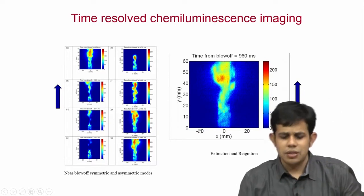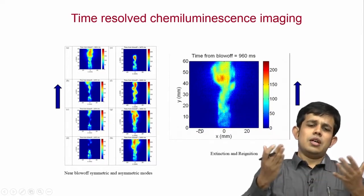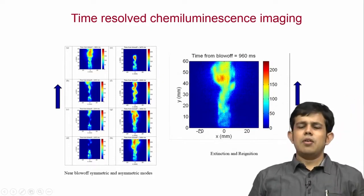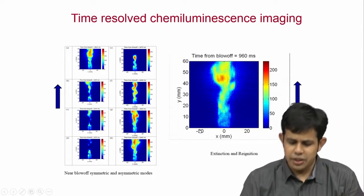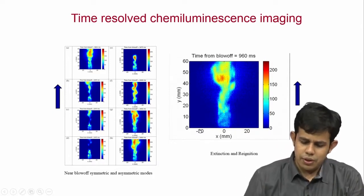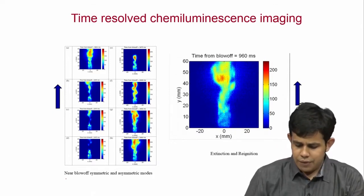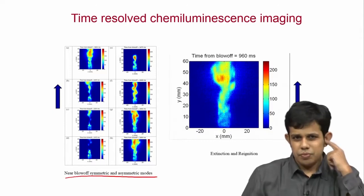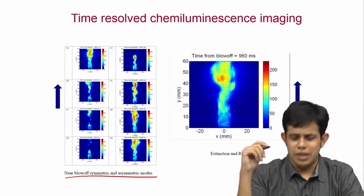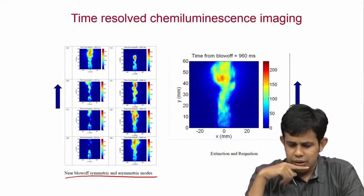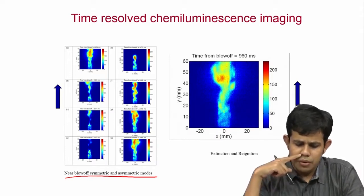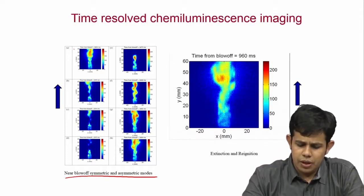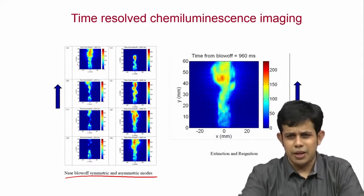Another limitation of chemiluminescence is that it is line-of-sight integrated, whereas PLIF and PIV give data in one plane. Still, you can get a qualitatively nice idea. This imaging was done at about 500 Hz, and this work was done approximately from 2008 to 2010.